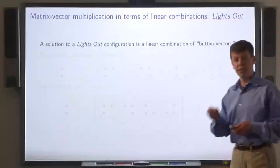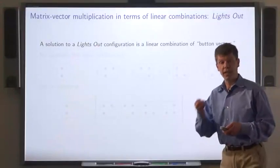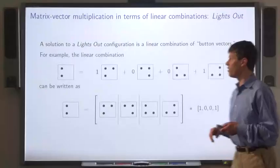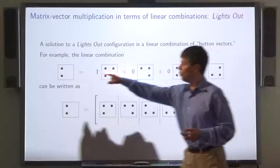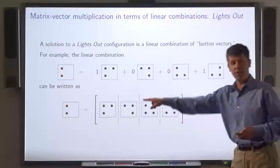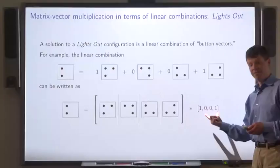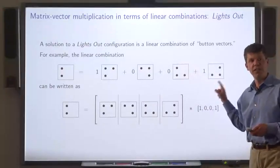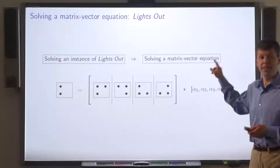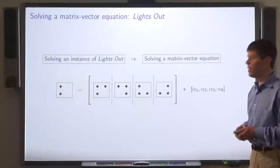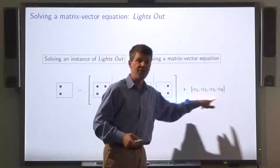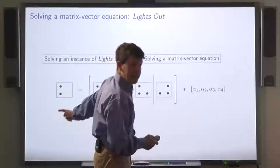Recall the lights out puzzle. We said that a solution to a given configuration for lights out is a linear combination of the button vectors, and we can write a linear combination as a matrix-vector product. For example, this linear combination can be written as the matrix-vector product where the columns of the matrix are the button vectors and the vector specifies the coefficients. Solving an instance of lights out can therefore be expressed as solving a matrix-vector equation: given the desired configuration and the matrix, find the entries of the vector such that M times the vector equals that desired configuration.